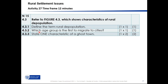Which age group is first to migrate to cities? The people that move are mainly younger — anywhere between 18 and 35. And state one characteristic of a ghost town — you can see in the notes what the town actually looks like.